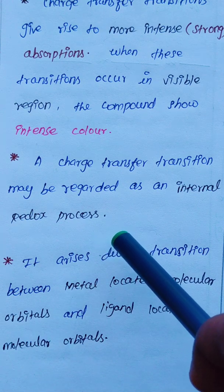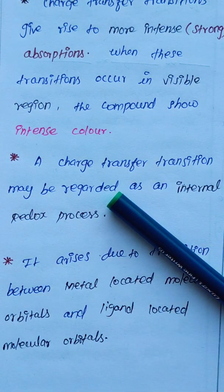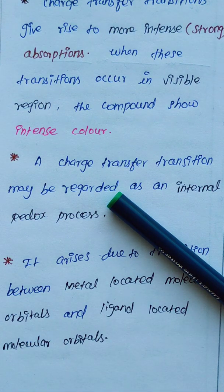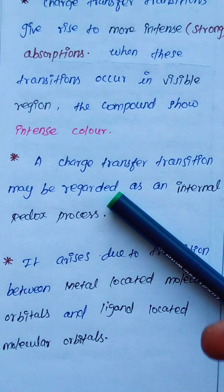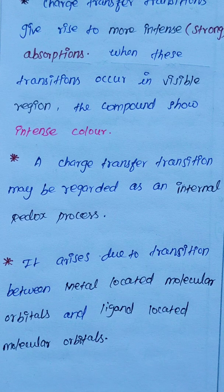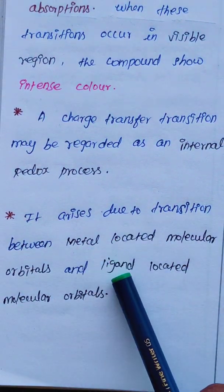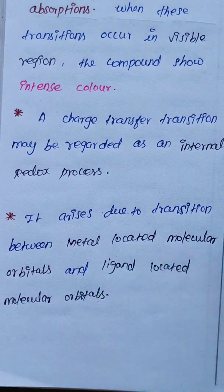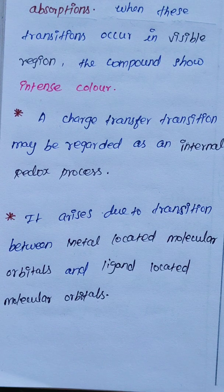A charge transfer transition may be regarded as an internal redox process. Charge transfer means electron transfer — from one place to another. The electron is lost by one species and gained by another, which means reduction and oxidation occur simultaneously — a redox process. So all charge transfer processes are internal redox processes. This transition arises due to electron movement between metal-located molecular orbitals and ligand-located molecular orbitals.